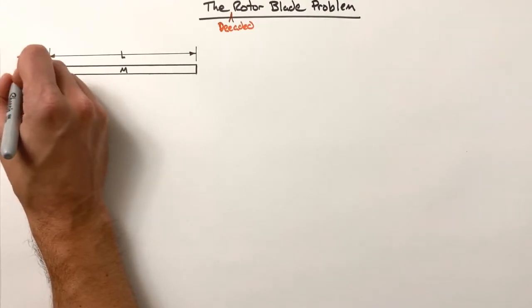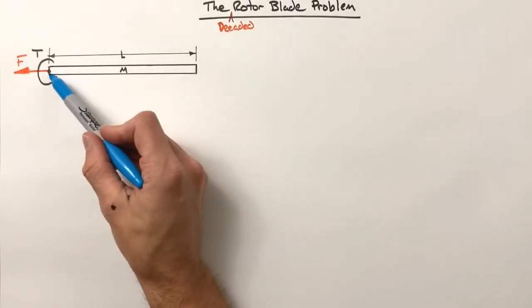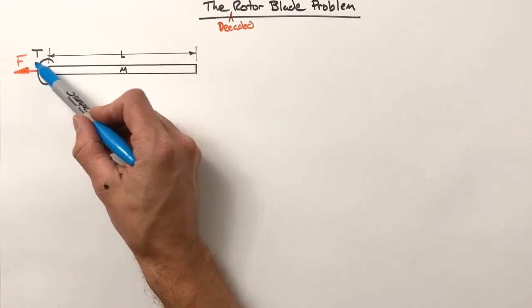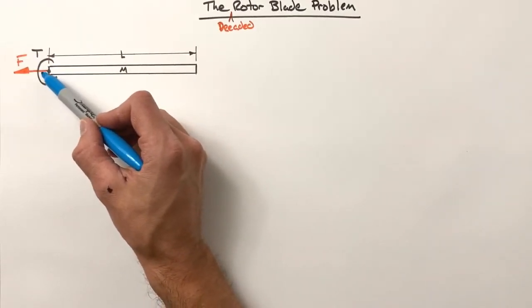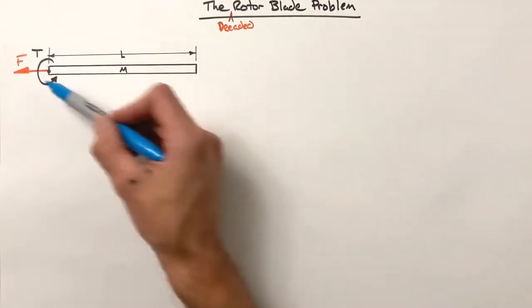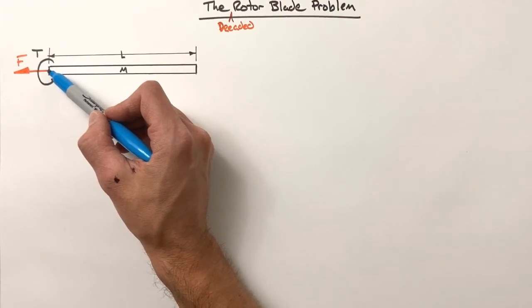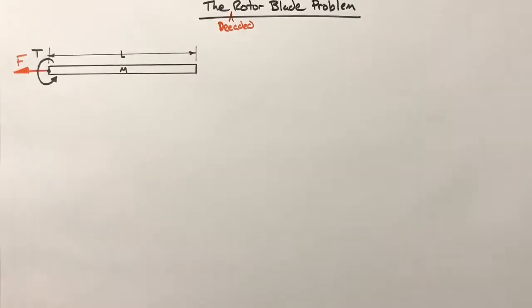We'll just call this force F — yes it is centripetal, but we'll just say it's some total force between this connecting pin or axle and this blade. In real life there would be a hub connecting this rotor to a rotating axle, but we're going to say this is just crudely attached to an axle so that the blade can rotate around its end. That'll affect our math later on.